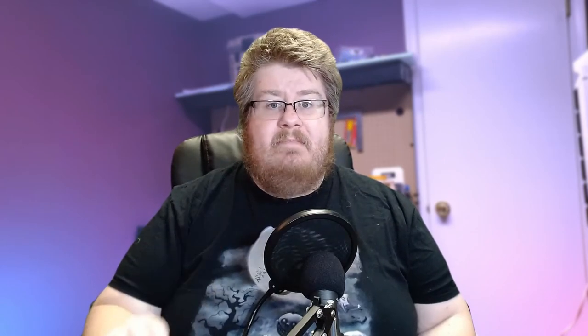When your player is making their roll, you as the game master will assign a difficulty class. This is the target number that your player is attempting to roll in order to be successful with their attempt. As your player's dice range from a D4 to a D20, the difficulty classes should, in general, fluctuate between those numbers depending on how easy or hard the task is.